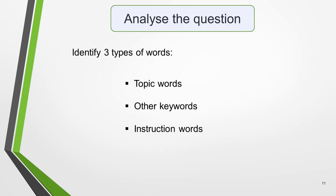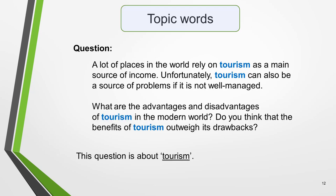Analysing the question will ensure that you answer it fully. It's quick and easy to do. You just need to identify three different types of words: topic words, other keywords and instruction words. Topic words are the ones that identify the general subject of the question and will be found in the statement part of the question. Here's the question we're going to be working on. I've highlighted the topic words in blue.